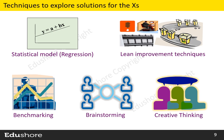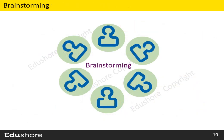Till now, we have learnt about three sources to explore solutions for the root causes: Statistical Model Regression, five improvement techniques of Lean, and Benchmarking. Now we will see the fourth source for exploring the solutions: Brainstorming. Let us look into the details of brainstorming that we do in the Improve Phase of a Lean Six Sigma project.